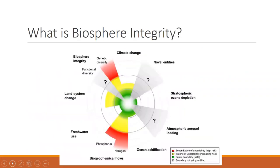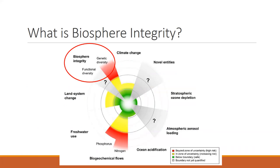Here's our planetary boundary framework — there's biosphere integrity. We've been talking about it in terms of genetic diversity and functional diversity. By the end of today I want you to understand the difference between what those things are: what do we mean by genetic diversity, what is functional diversity, and why is it so hard to measure functional diversity versus genetic diversity?